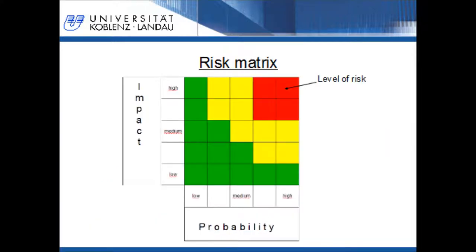Here we can see a so-called risk matrix. The red color means high risk, the yellow color medium risk, and the green color low risk. On the y-axis we have the height of the potential impact; on the x-axis we have the probability of the hazard. The level of risk is defined by these two variables. The highest risk is in cases where the impact and the probability are high. The lowest level of risk is where we have a low impact and a low probability. In the case of pesticides, this means we can decrease the level of risk either by decreasing the impacts by using less toxic pesticides or by decreasing the exposure, or by decreasing the probability that a person stays in an area where pesticides are applied.